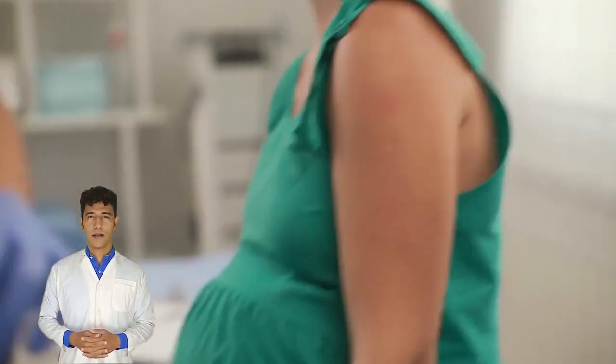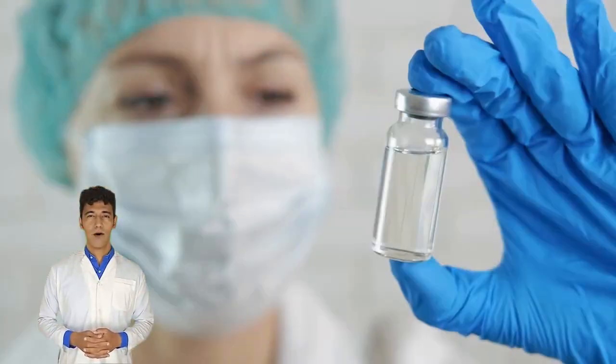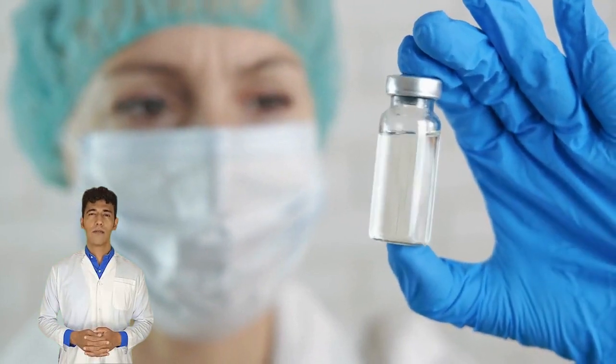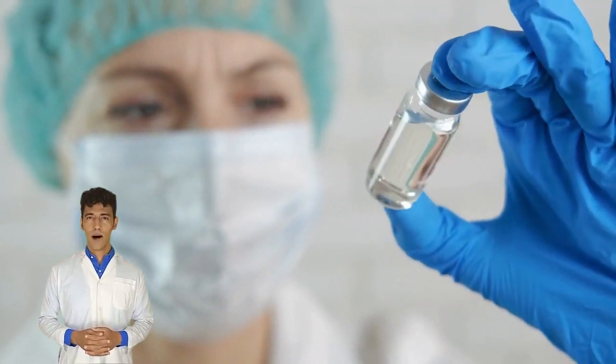Finally, subunit, recombinant, or conjugate vaccines contain only specific pieces of the microbe, such as a sugar or protein, that is necessary for the immune system to trigger an immune response.